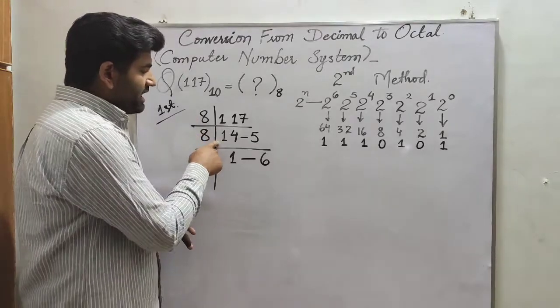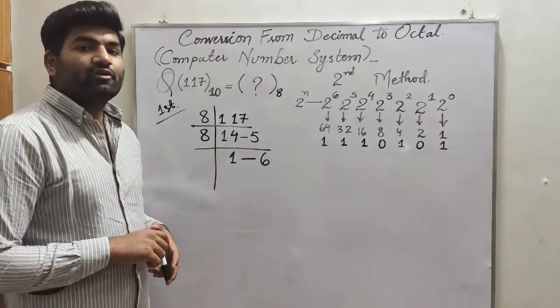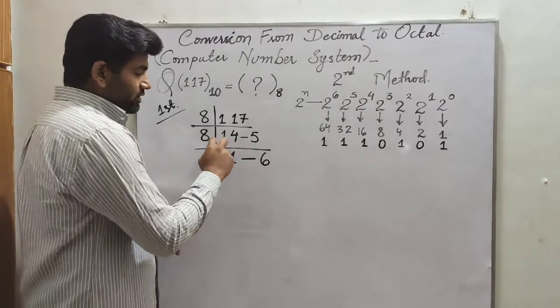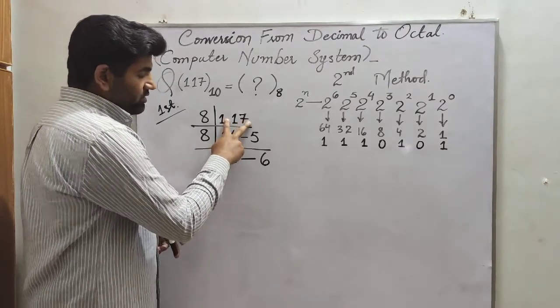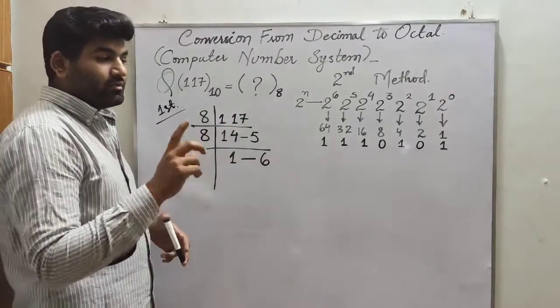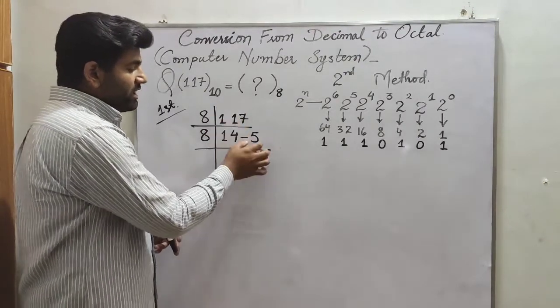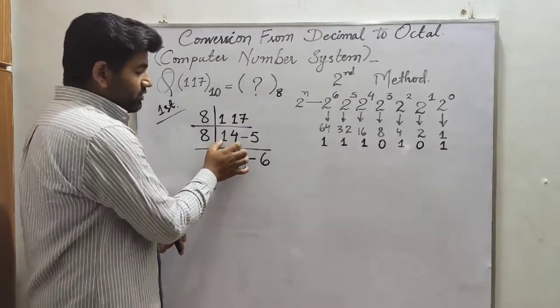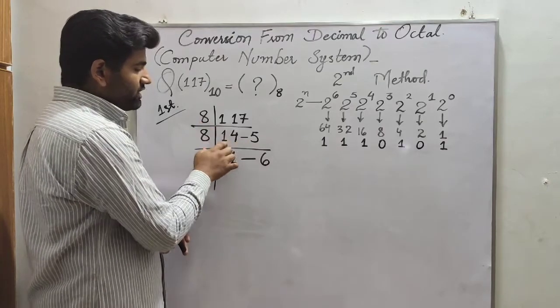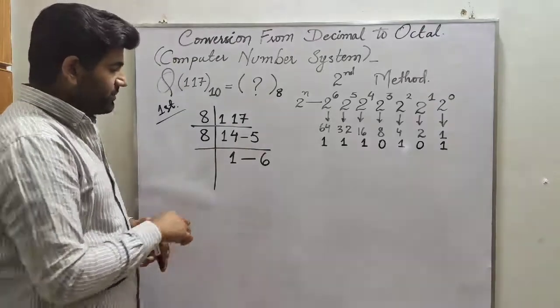For example, 8 into 14 is 112. So now we are going to write 14 here. And what is left? Between 117 and 112 is 5.